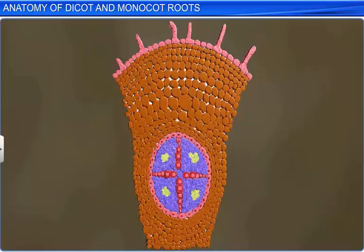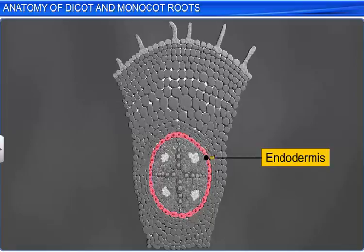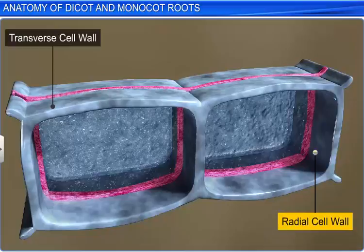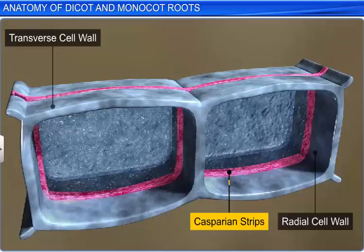The innermost layer of the cortex comprises barrel-shaped cells without any intercellular spaces. This layer is known as the endodermis. The tangential and radial walls of the endodermal cells have deposits of a water-impermeable material called suberin, which forms casparian strips. Suberin is a waxy, waterproof substance present in the cell walls of the cork tissue in plants.